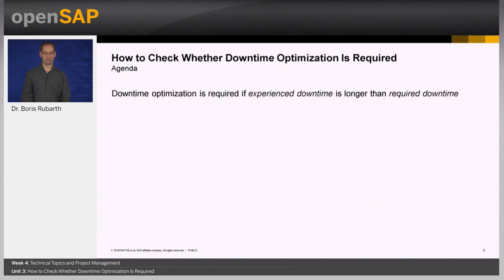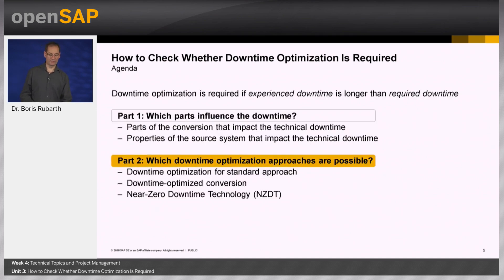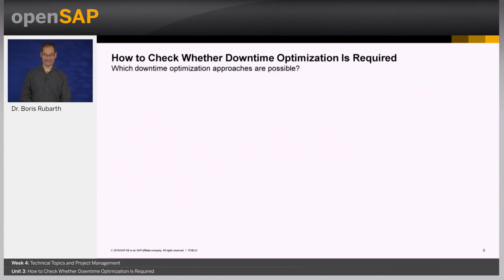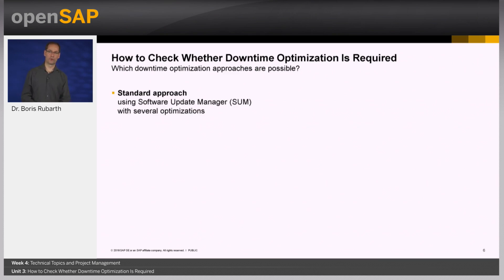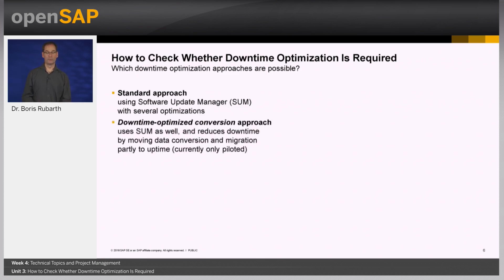Moving to the second part of our journey on downtime optimization: which downtime optimization approaches are possible? We have three approaches. The first is what we call the standard approach — executing the technical conversion with the Software Update Manager. There are optimizations built into the tool, as well as optimizations you can apply yourself, and this approach is improved with every new SP version of the Software Update Manager. If the downtime is too long for your project, you may consider the downtime optimized conversion approach.